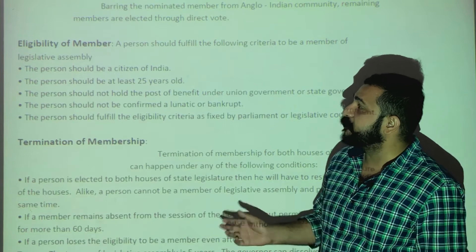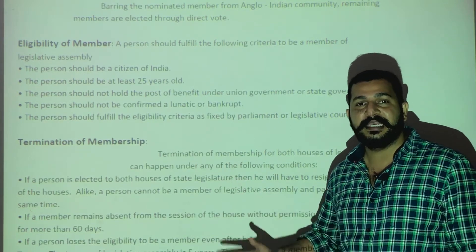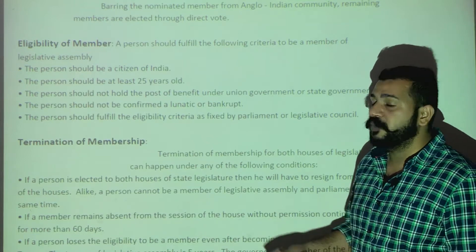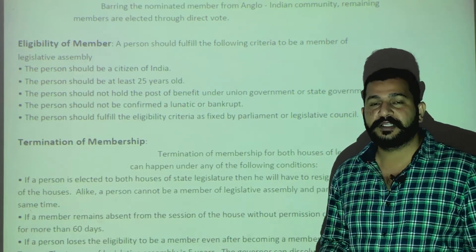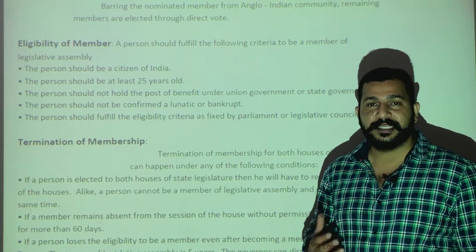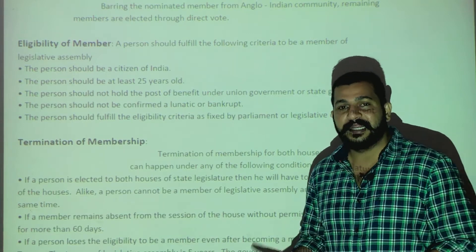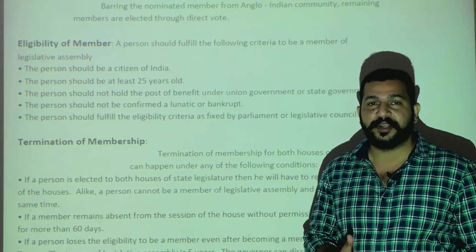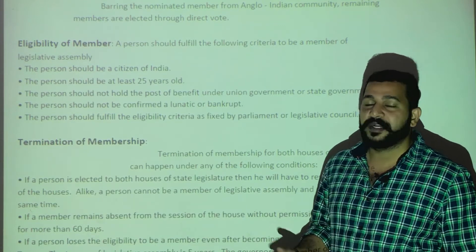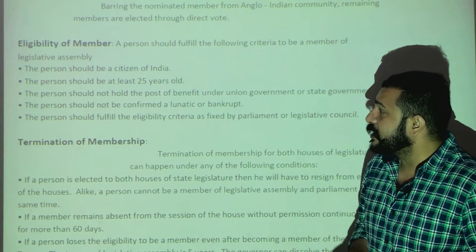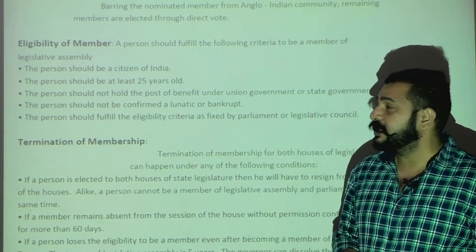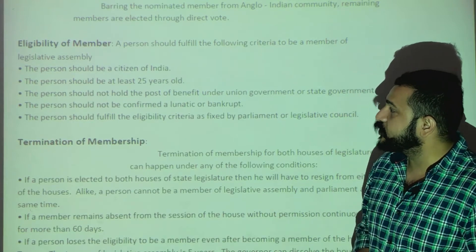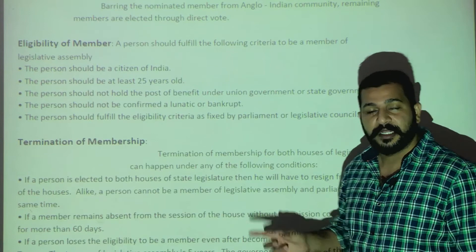Now the topic of eligibility of members — what criteria must be fulfilled to become a member of the Legislative Assembly. The first point: the person should be a citizen of India. The second point: the person should be at least 25 years old to become a Legislative Assembly member. The third point: the person should not hold any post of profit under the union government or state government.